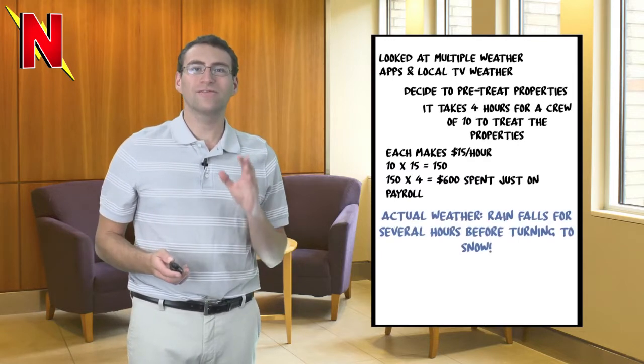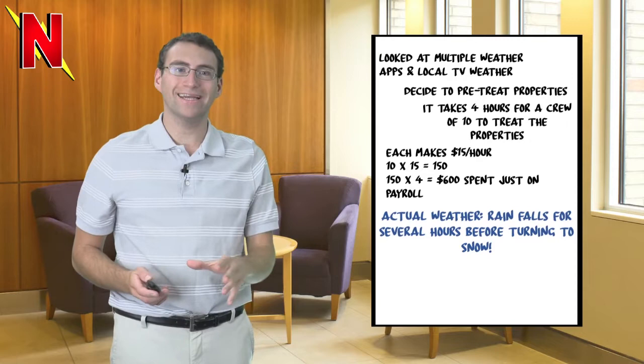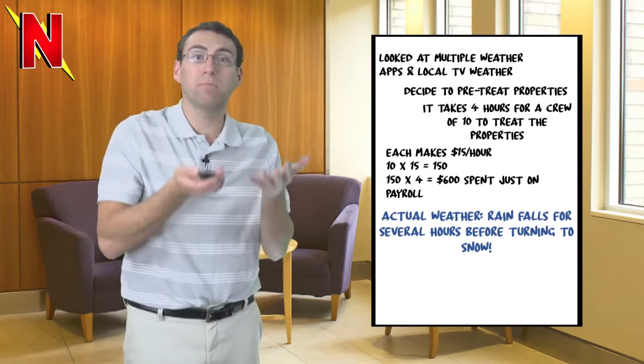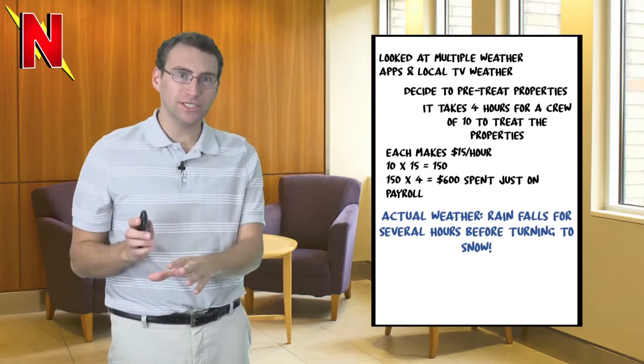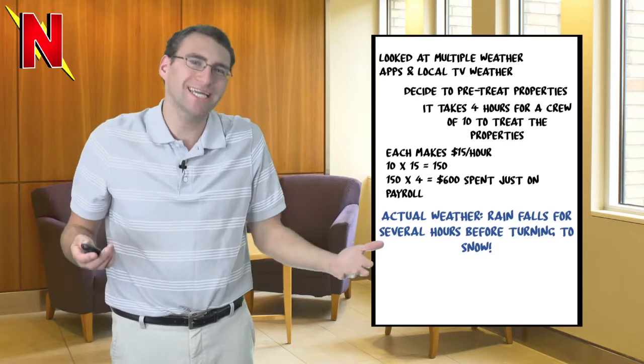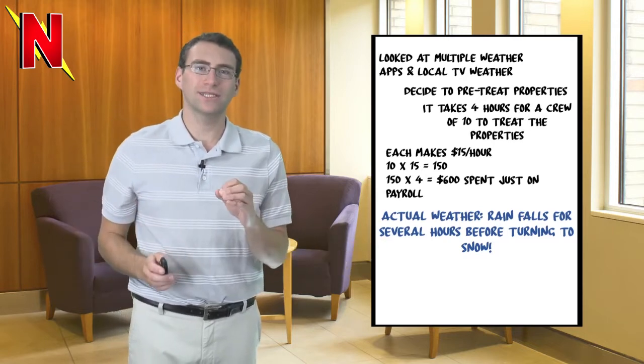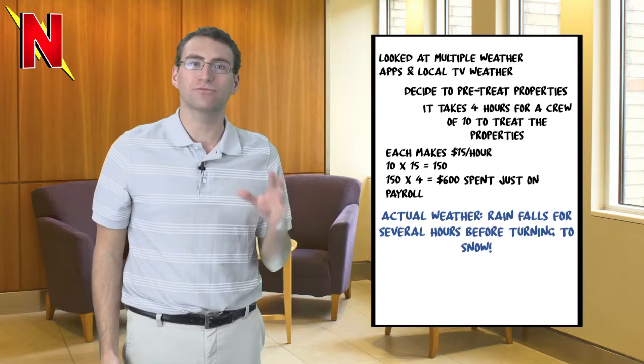In reality, the weather event starts out as rain with temperatures staying just above freezing. It eventually changes to snow and a slushy inch accumulates. Neoweather would have noticed that warm air was aloft causing rain.